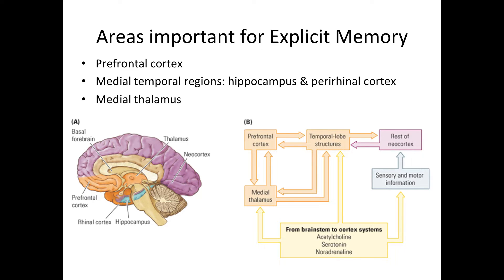The general anatomical areas of explicit memory are the hippocampus, the rhinal cortices next to the hippocampus in the temporal lobe, and the prefrontal cortex. The nuclei of the midline thalamus also participate, making a big connection between the prefrontal cortex and temporal lobe structures. The regions that make up the explicit memory circuit receive input from the neocortex and from the ascending systems in the brainstem, including acetylcholine, serotonin, and noradrenaline activating systems.